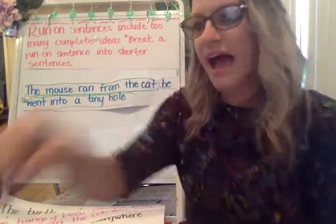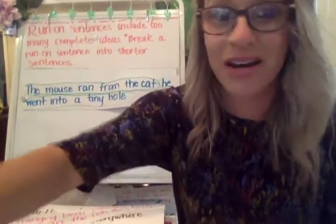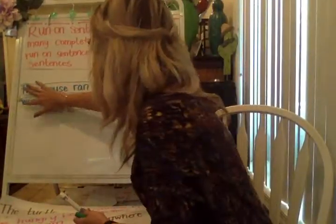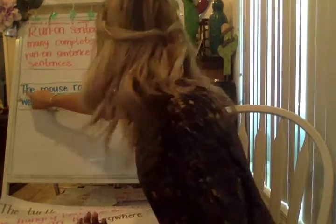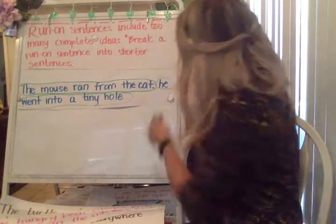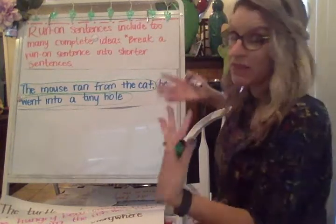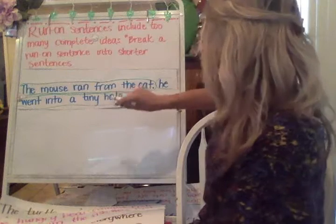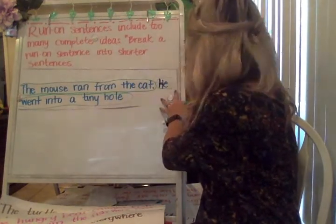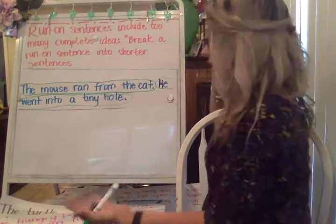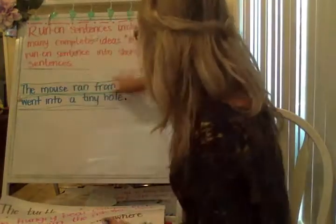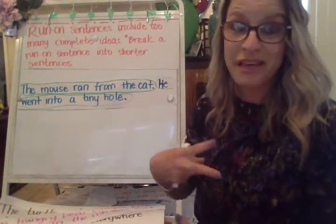I can also add punctuation and turn it into two sentences because there are two complete thoughts. The first sentence — 'The mouse ran from the cat.' I put a period there. For the next complete thought, the next sentence: 'He went into a tiny hole.' I just need to turn this lowercase h into an uppercase H and add my period there. I've changed it from a run-on sentence into two complete thoughts.